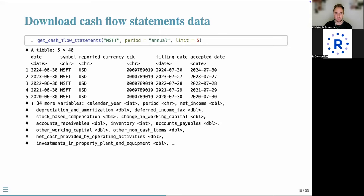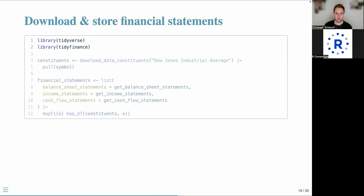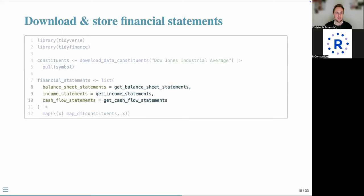Now let's look at financial ratios. Because we want to compare across companies, we download financial statements for several companies. We focus on the Dow Jones Industrial Average, using the tidyverse package for manipulation and the tidyfinance package to download data. We use the download_data_constituents function to get the 30 stock symbols in the DJIA, then map the three functions across symbols to fetch five years of balance sheet, income statement, and cash flow statement information.